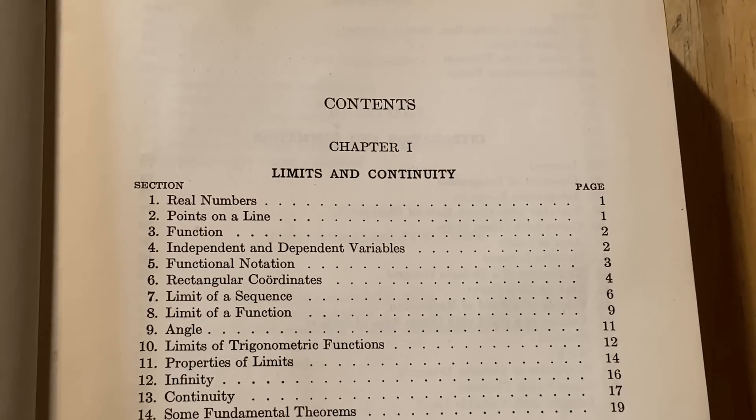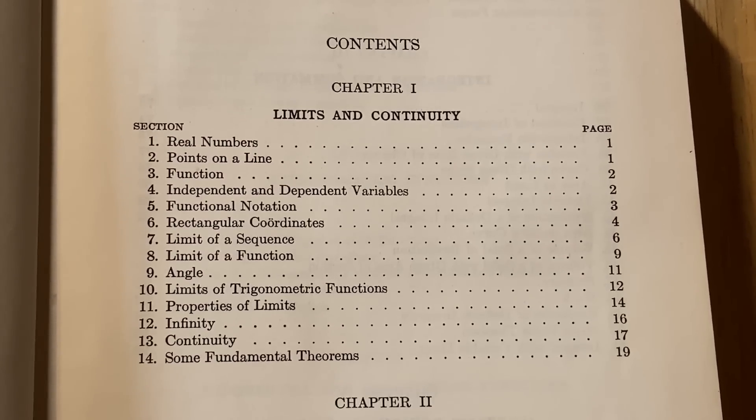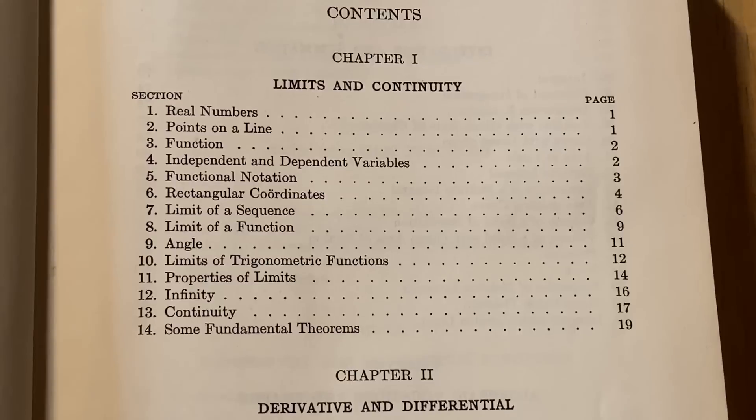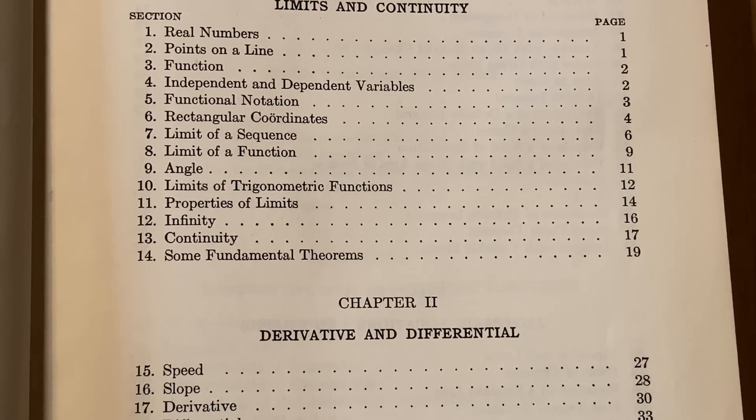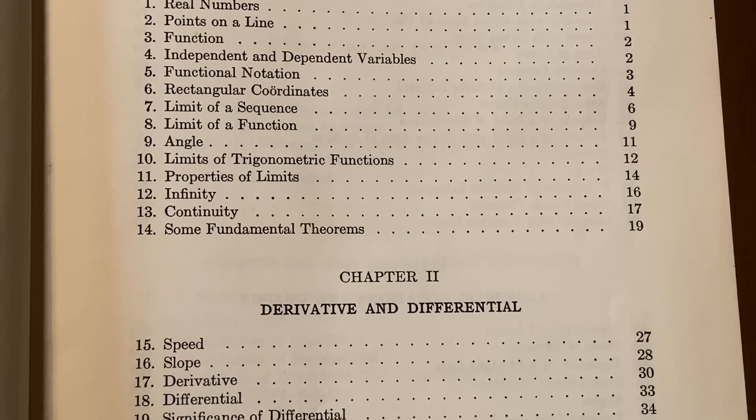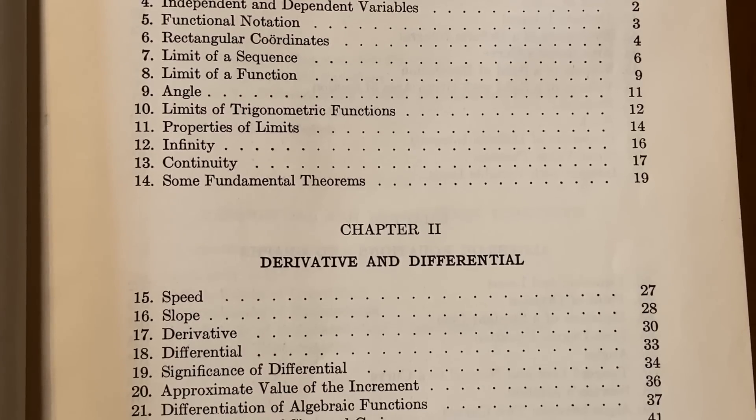Let's take a look at some of the contents here. We have limits and continuity. So it starts with real numbers, points on a line, functions, independent and dependent variables, functional notation, rectangular coordinates, limit of a sequence, limit of a function, angle, limits of trig functions, properties of limits, infinity, continuity, and some fundamental theorems.